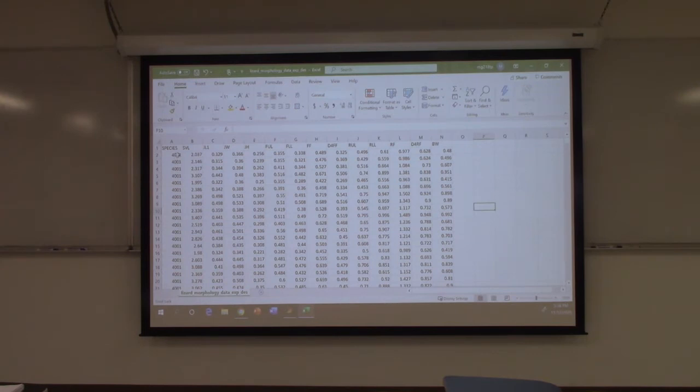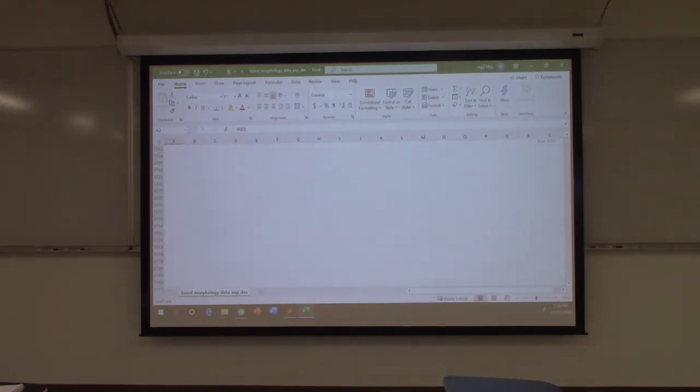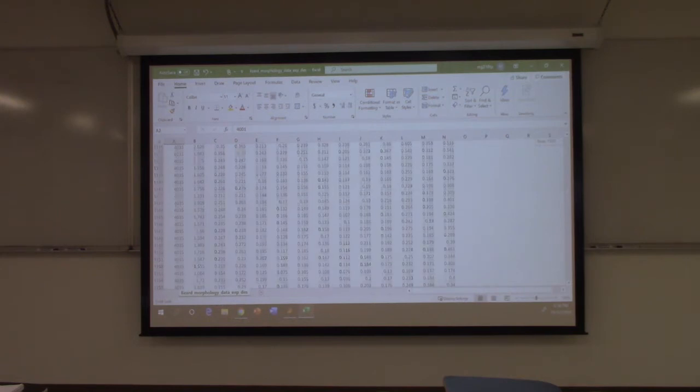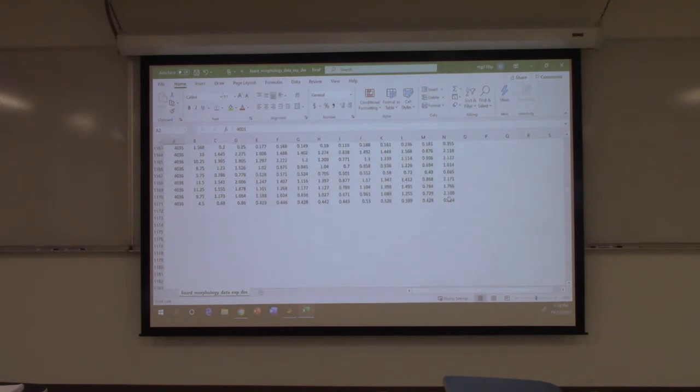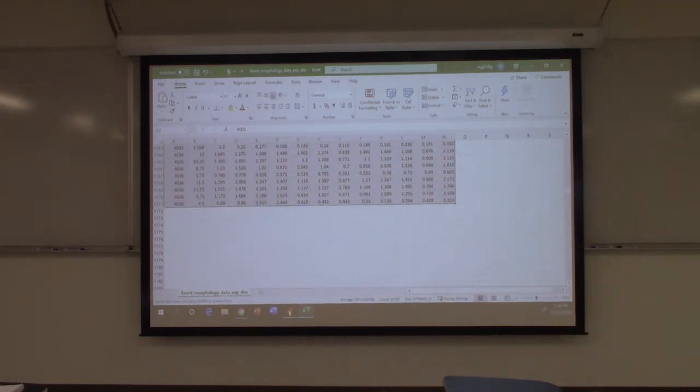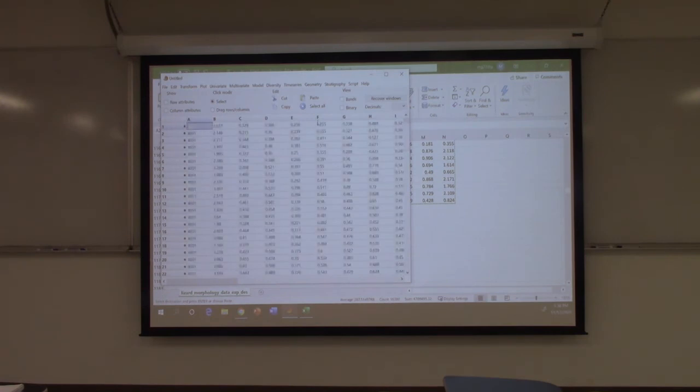Okay, so here's my data set, I'm going to click on that very first one there, scroll down to the bottom, oops, so it's 1170 observations, and control C, so I'm copying all of that, I'm going to paste it into past.